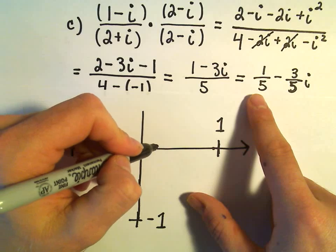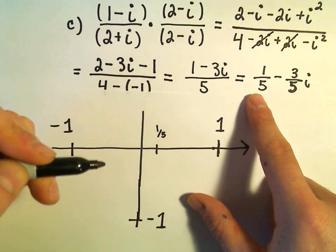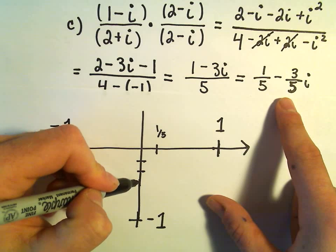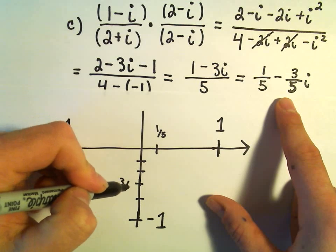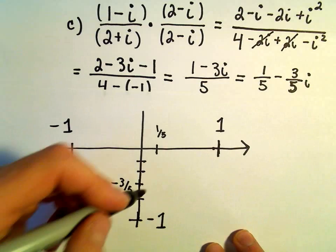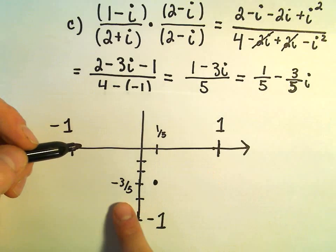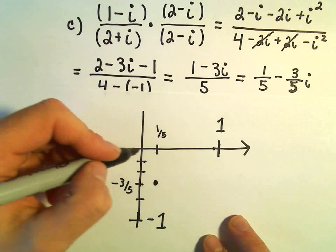It says for the real part, you're only going over to 1 fifth. And then we have to go down, so let's see, 1, 2, 3, 4, 5. So here would be negative 3 fifths. We can put a dot right there. So the real part is positive 1 fifth, the imaginary part is negative 3 fifths.